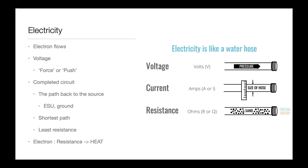Electricity always finds the shortest path with the least resistance to complete the circuit, whether you realize it or not. This creates both pros and cons, because it can also produce complications you didn't intend. Whenever electrons hit resistance, they create heat. Comparing electricity to water: voltage is like pressure, current (amps) is like the size of the hose, and resistance is like sand or slush blocking the flow.